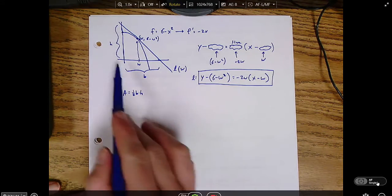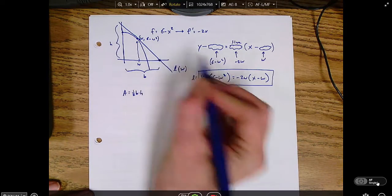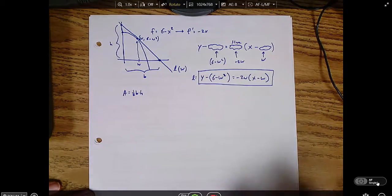So now that we have this equation, how are we going to find the base and the height? Well, it seems like the base is the same thing as the x-intercept, and the height is the same thing as the y-intercept. So let's figure those out.